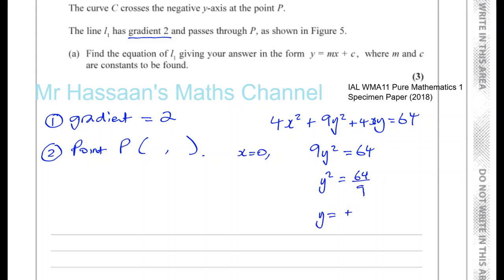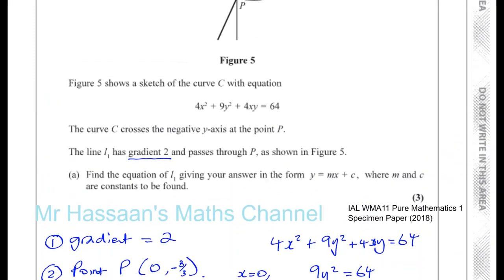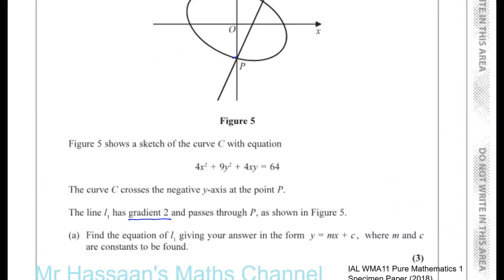So y² equals 64 over 9, meaning y equals plus or minus the square root of 64 over 9, which is plus or minus 8 over 3. Since the point P is where the curve crosses the negative y-axis, y is negative. So the y-coordinate of P is −8/3 and the x-coordinate is 0, giving us the point (0, −8/3).